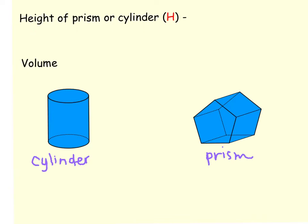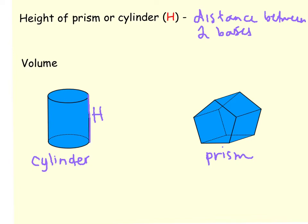Before we talk about the actual volume formula, we want to talk about the height of a prism or a cylinder. When you're talking about the height of a prism or a cylinder, you're always talking about the distance between the two bases. The cylinder has two circle bases, so the height is the distance between those bases — from top to bottom. If the cylinder is on its side, the height is still just the distance between the two bases.